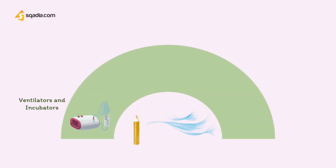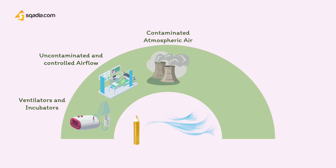The use of air is probably the most important for the vitality of critical patients. Air can be used in ventilators and incubators to provide uncontaminated and controlled air flows. It can also be used as a replacement for contaminated atmospheric air, as a carrier for volatile anesthetic agents, and as a power source for pneumatic equipment.